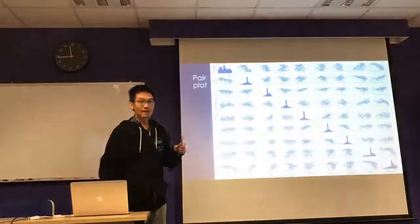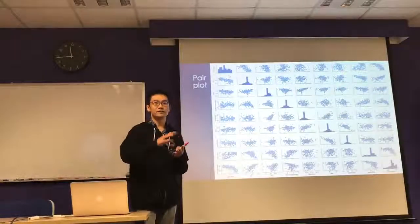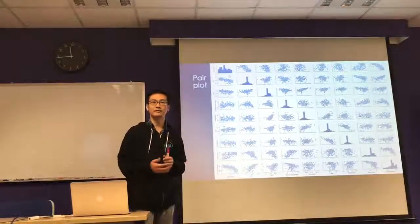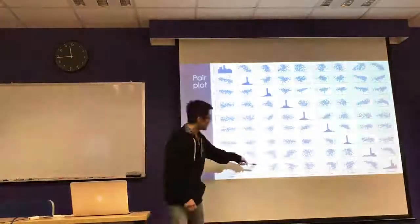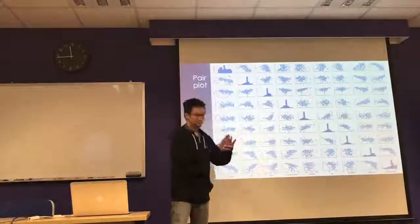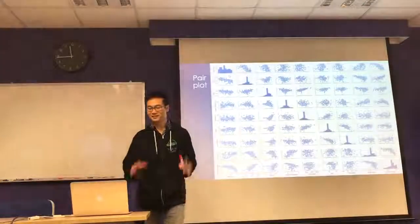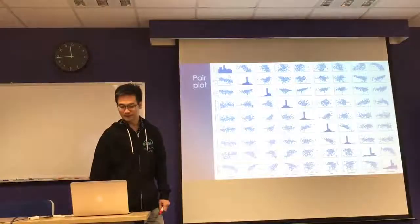Then I did a pairplot again. After transformation and after dropping the individual features, the points now look like they are no longer skewed to one side.